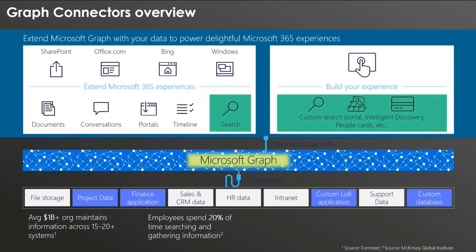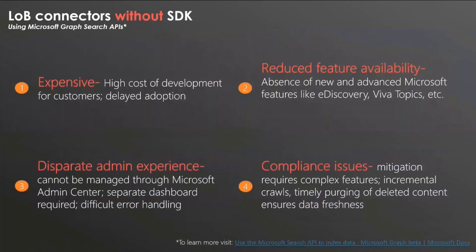But if you have line-of-business applications, custom databases, or project data stored somewhere and you want to index that content into Microsoft Graph as well, that is where custom Graph Connectors come in. The ones highlighted in blue are the ones for which you might want to write custom Graph Connectors on your own, powering scenarios like search, e-discovery, and Viva Topics — all powered by data coming through your data sources into Microsoft Graph.